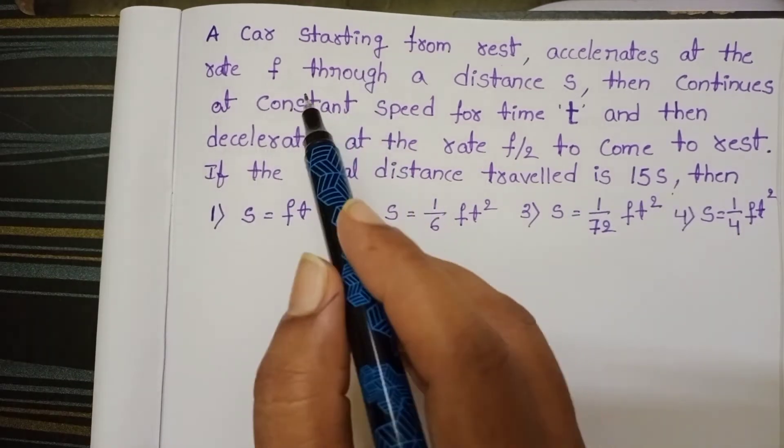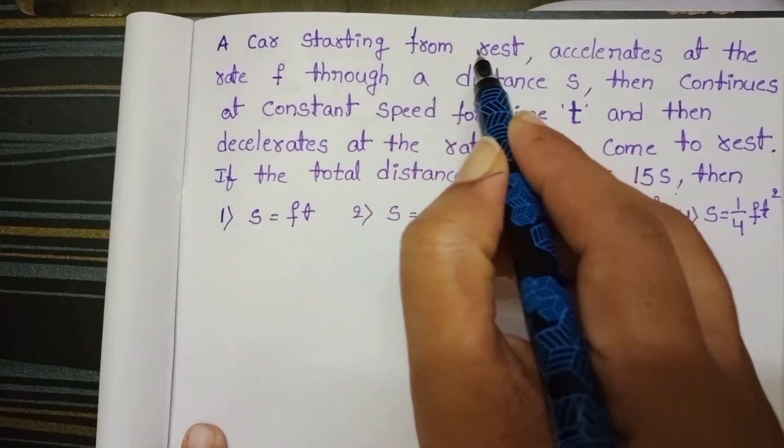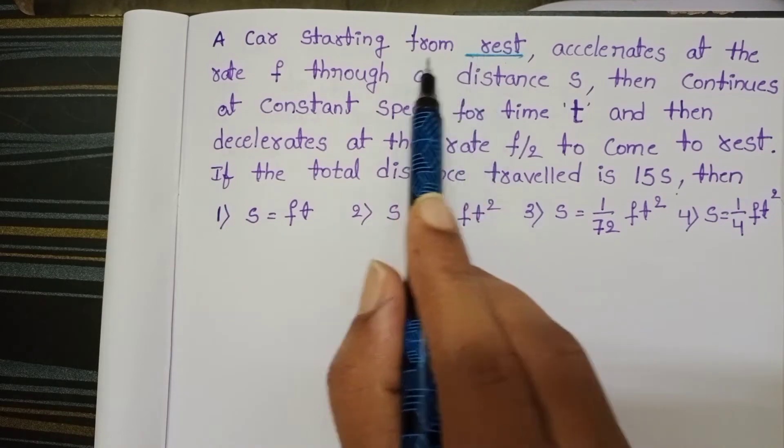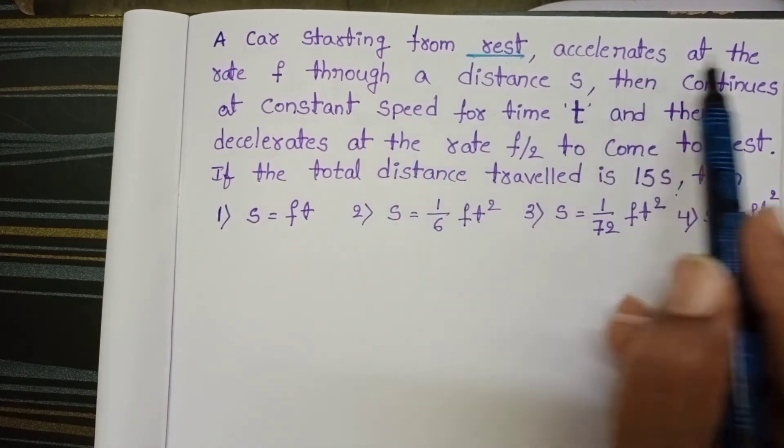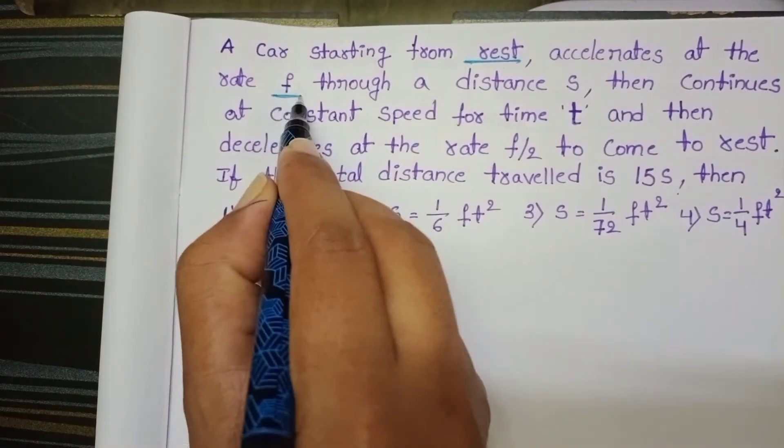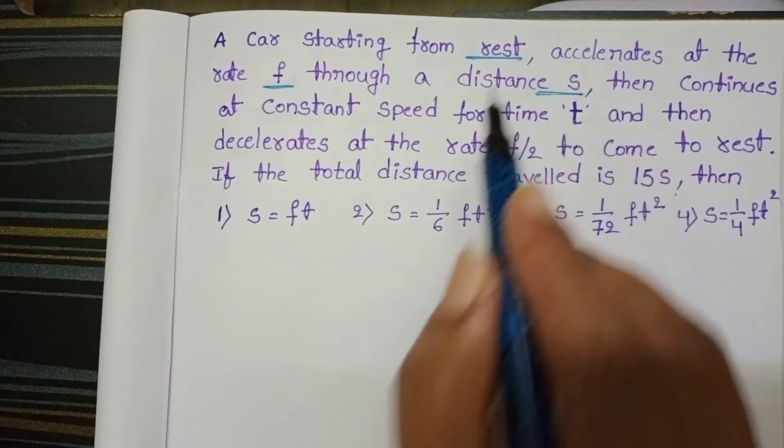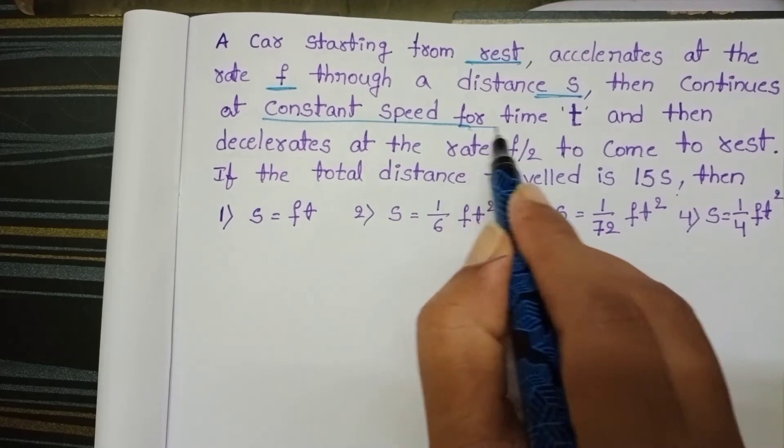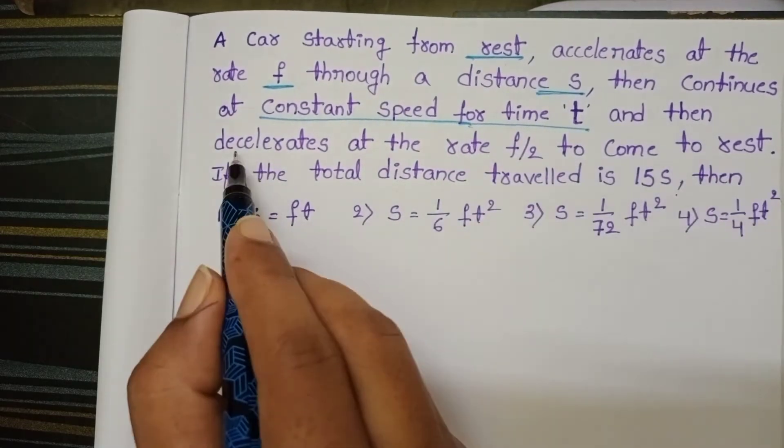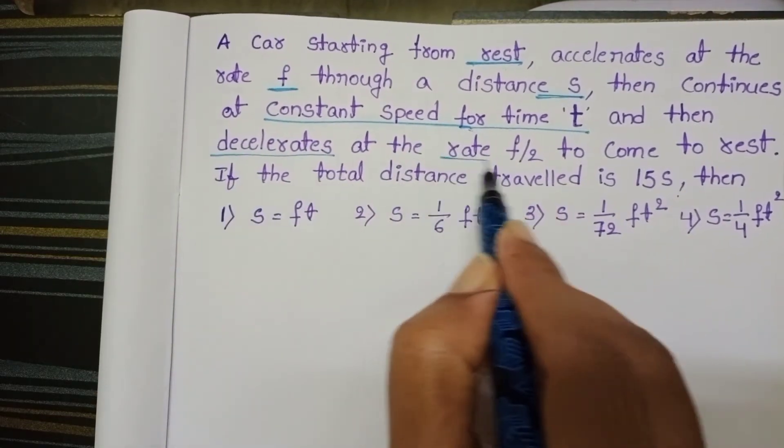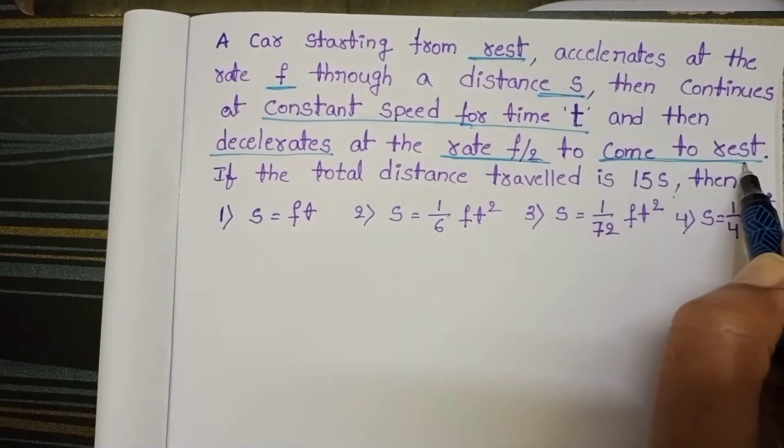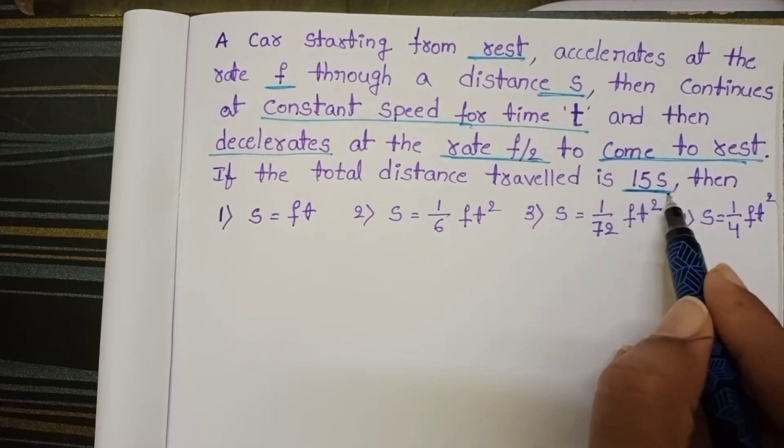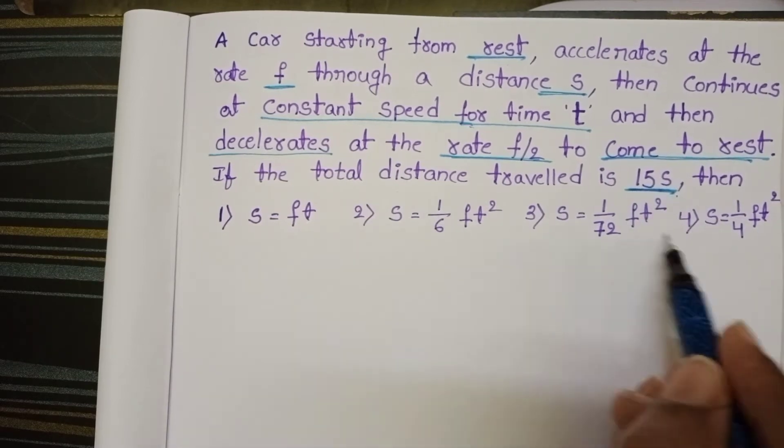the given problem: a car starting from rest, initial speed of the car is 0, accelerates at the rate f through a distance s and then continues at constant speed for time t and then accelerates at the rate f/2 and again it comes to rest. If the total distance travelled is 15s, then which relation is correct?